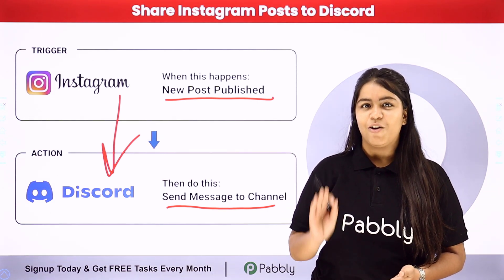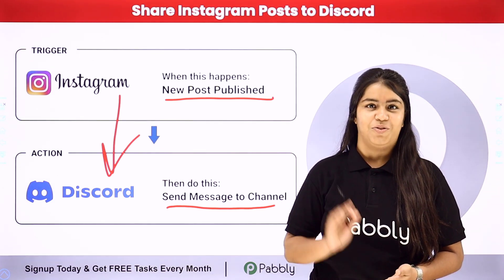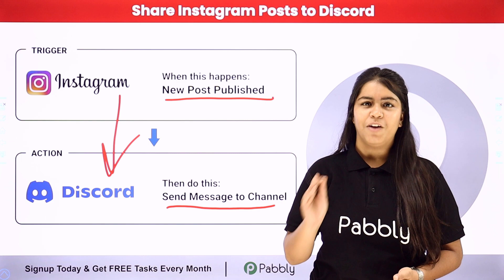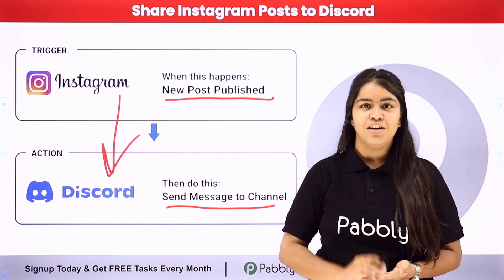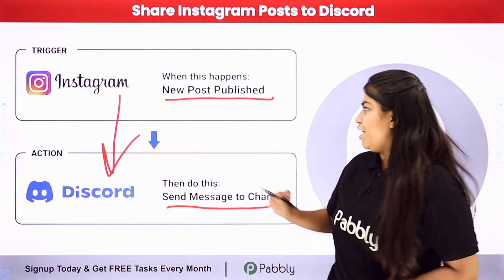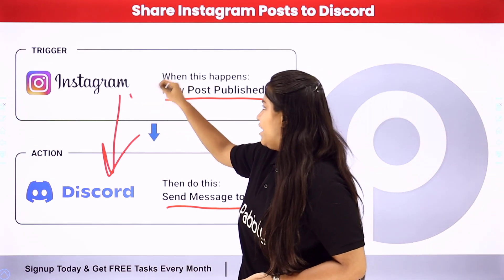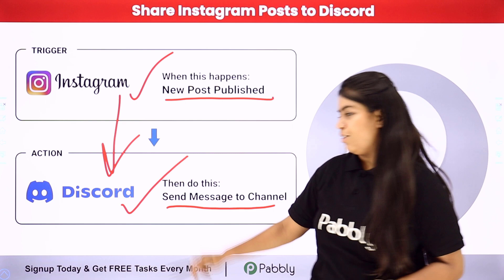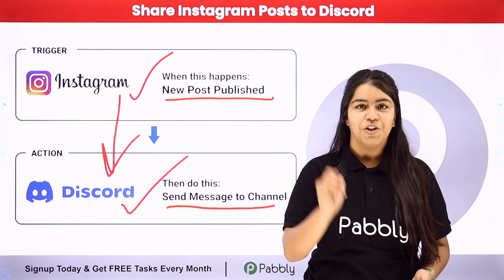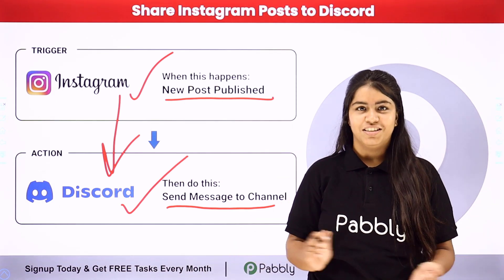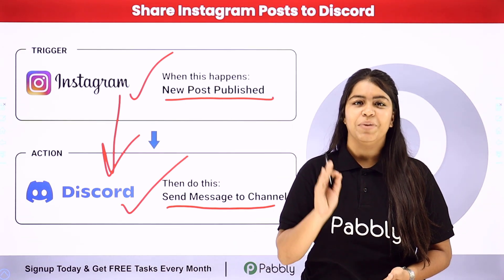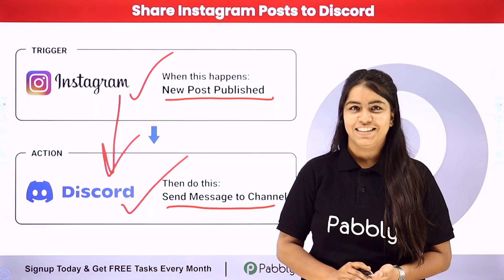Pabbly Connect is an amazing automation software. In Pabbly, we have the concept of Trigger and Action. For Trigger, we are going to use Instagram, and for Action, we are using Discord. So if you also want to learn this process step by step, follow me through the screen.